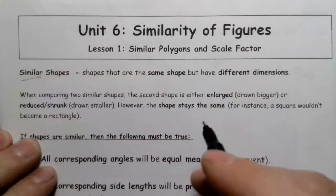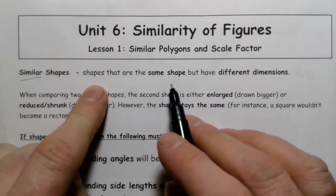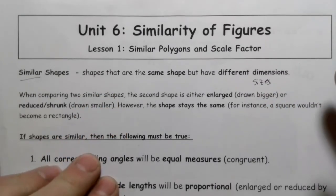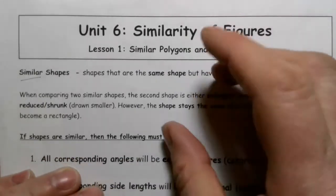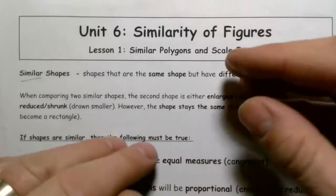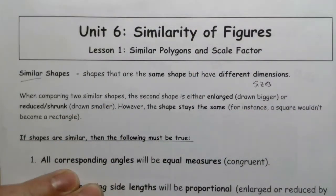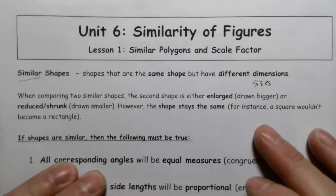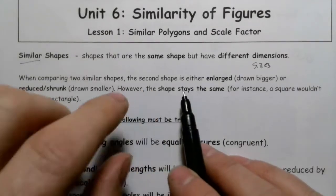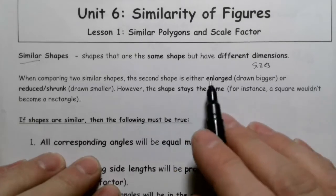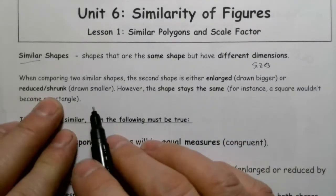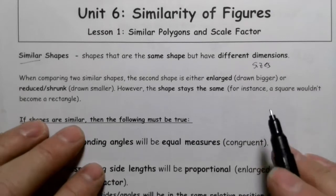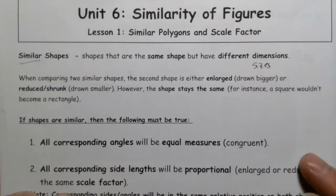Similar shapes means shapes that have the same shape but different dimensions — different sizes. It's almost like you've got a picture on your phone and you zoom in so the picture gets larger but it's still the same shape, or you zoom out and it gets smaller but it's still the same shape. The second shape is either going to be enlarged or reduced, but the shape stays the same — a square stays a square, it doesn't become a rectangle, circles don't become ellipses.